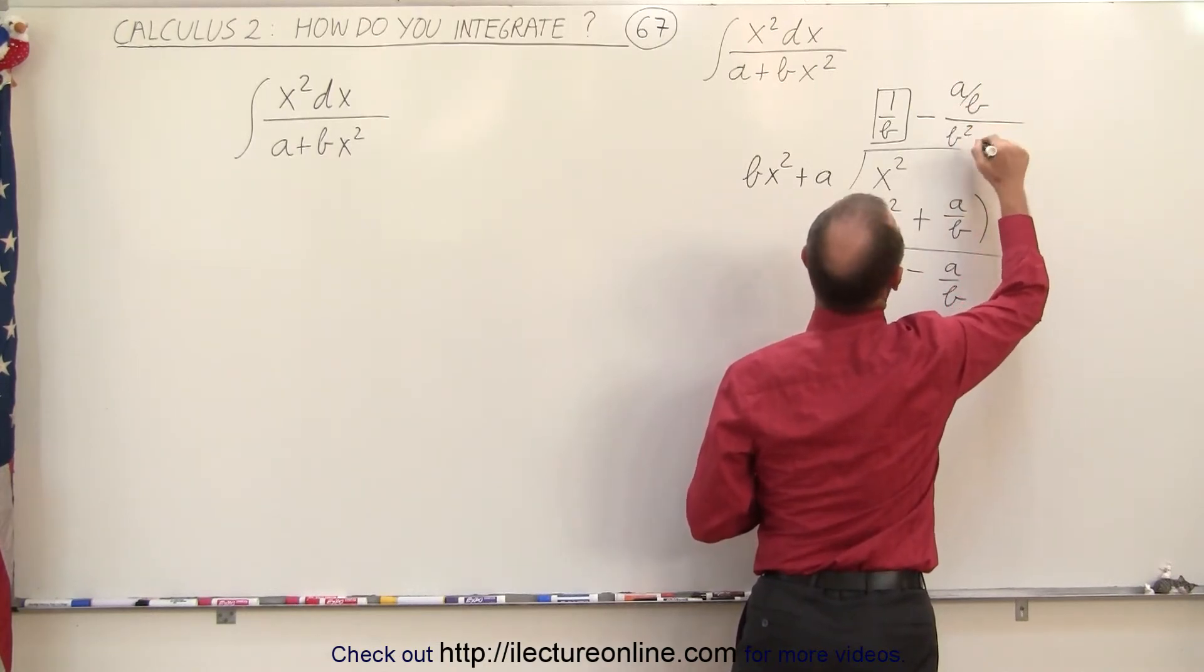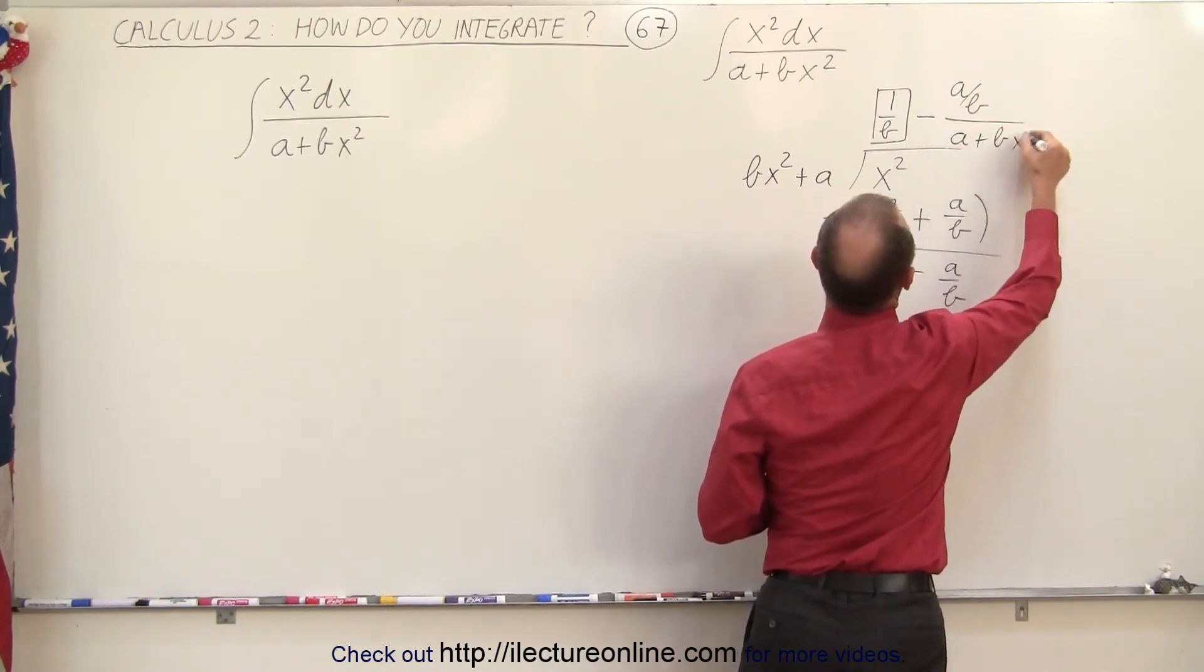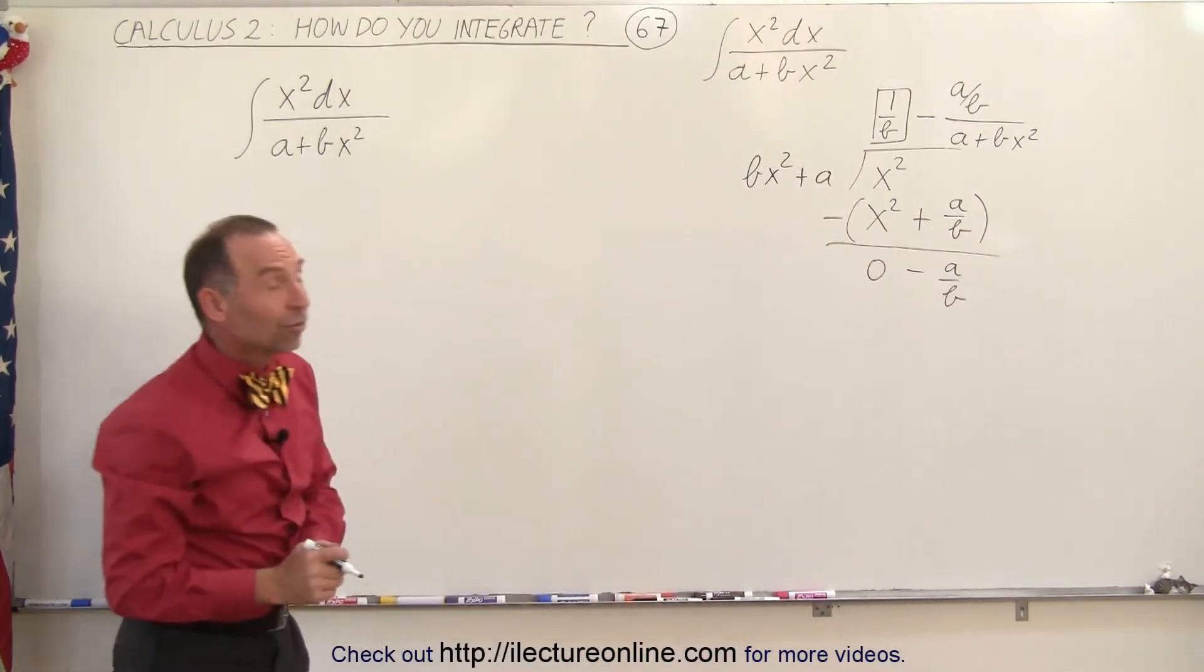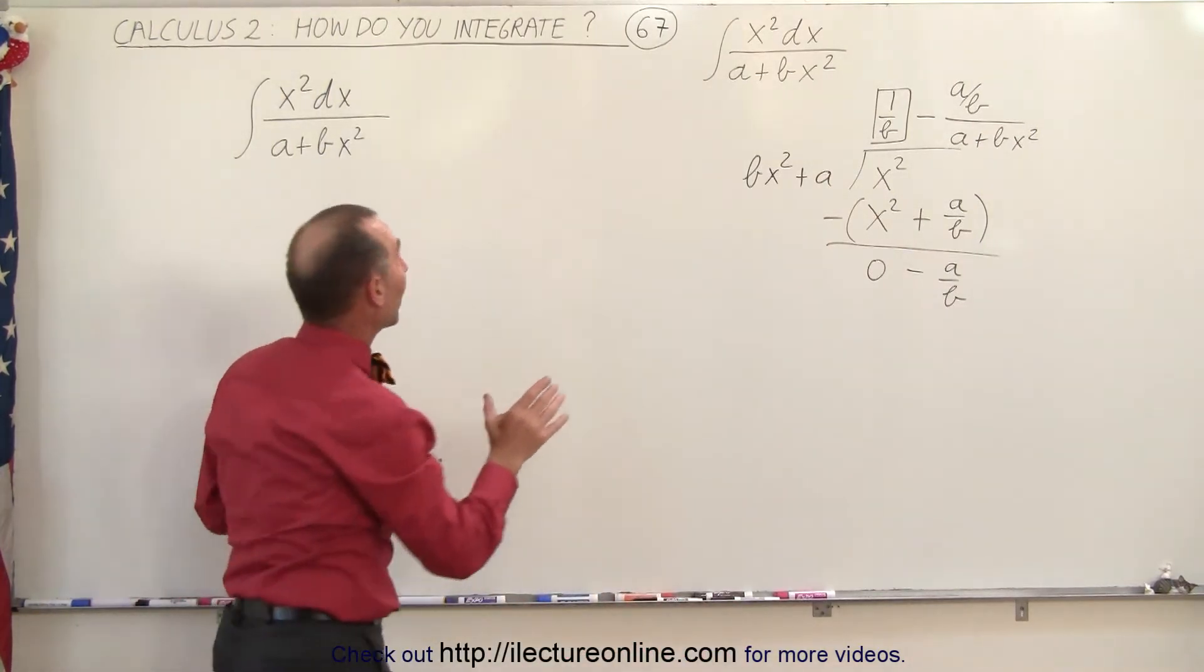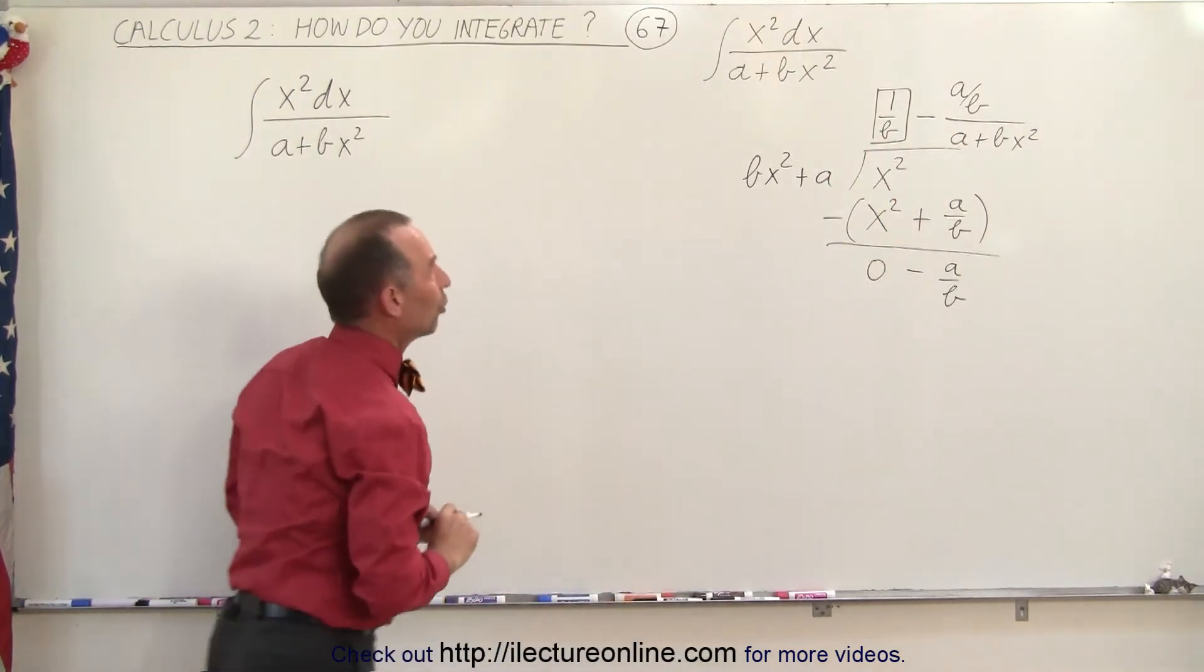Or I'll just write this as a plus bx squared, so we have the same order we have over there. Now that we have that, I can write my integrand as the sum or in this case the difference of those two terms.